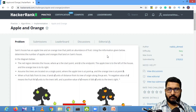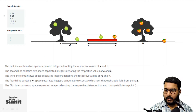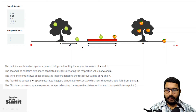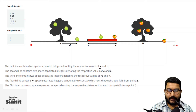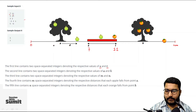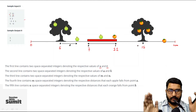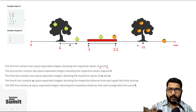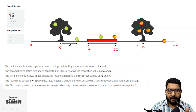Let's better understand this problem. We assume a number line where this point is zero and this point is positive infinity. There are five lines of input. The first line gives the values of s and t — s is 7 and t is 11. The second line gives a and b — a is 5 and b is 15. So at point 5 you have the apple tree, and at point 15 you have the orange tree.